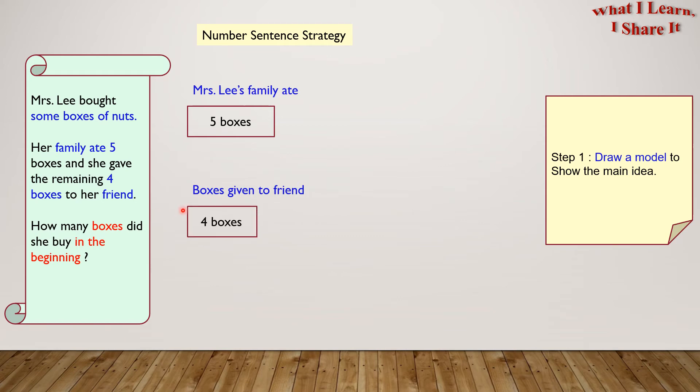And the remaining are four boxes. So I've represented four boxes with a rectangle, but this rectangle is slightly smaller than the five boxes one because it is one less.